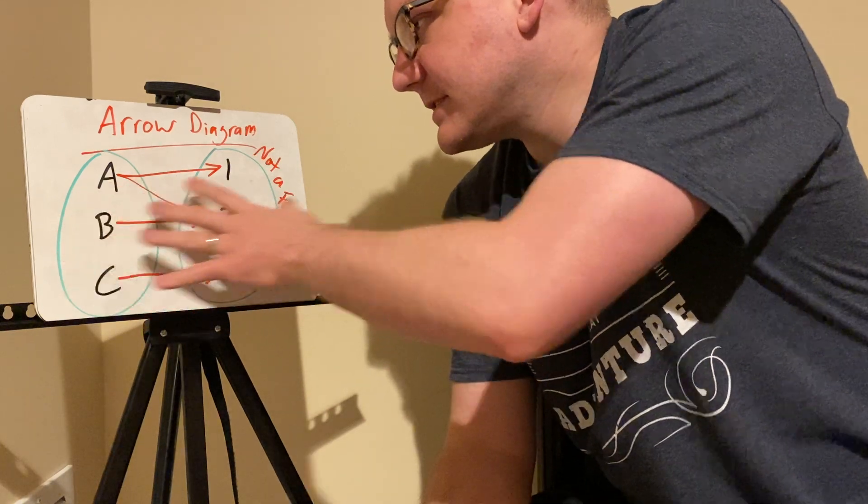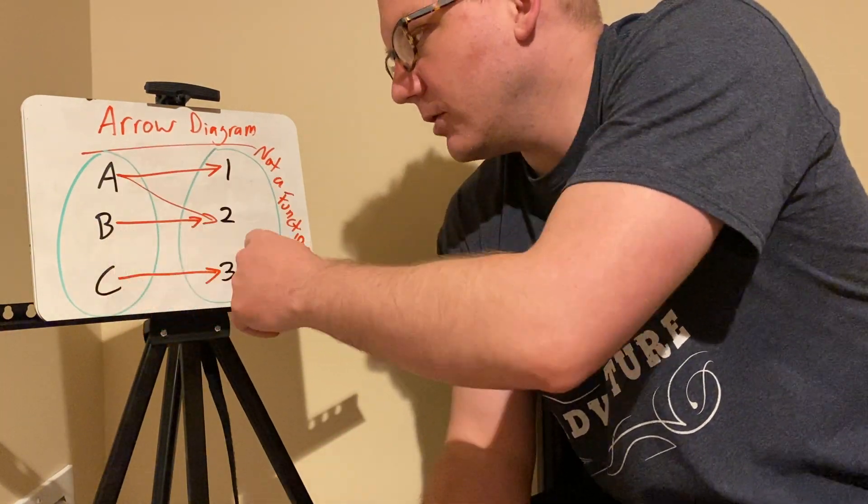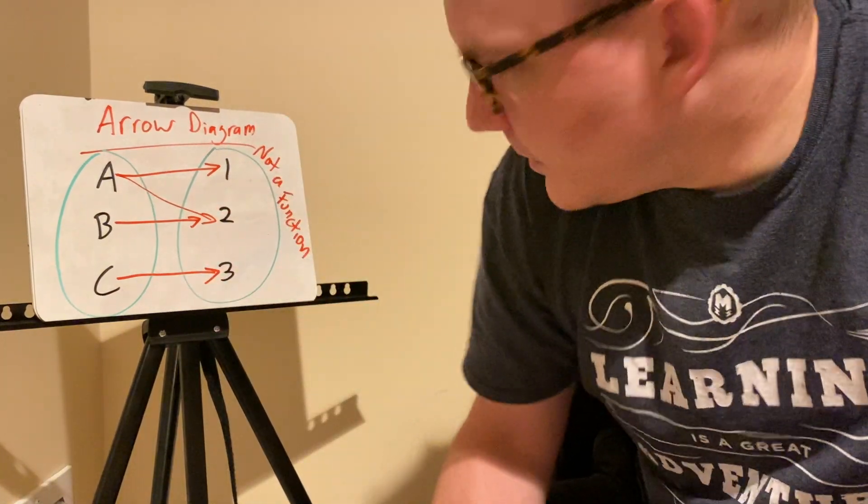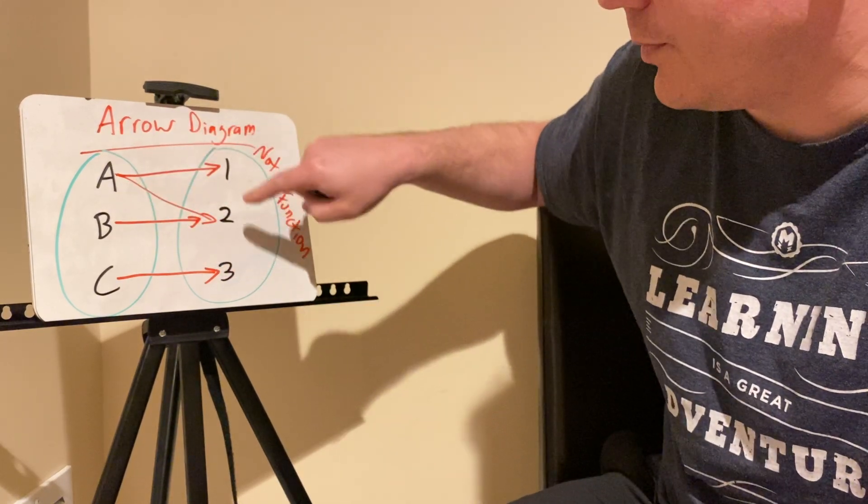So this current thing is called an arrow diagram. We have our inputs on the left and arrows drawn to the outputs. As currently drawn this is not a function because the input value a has two different outputs.